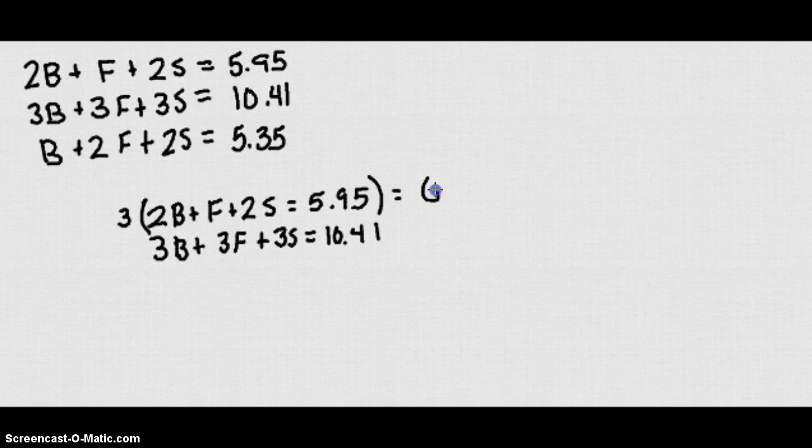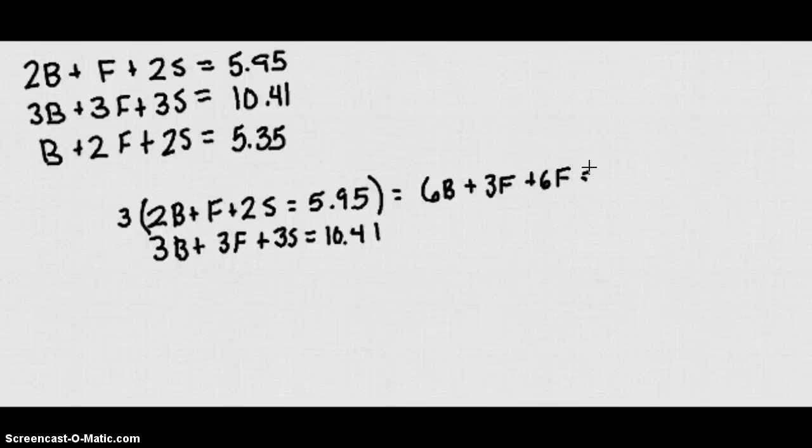So if I multiply that by 3 I get 6B plus 3F plus 6S. 5.95 times 3, I'm going to have to pull out the calculator for that one. And that comes out to 17.85.